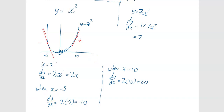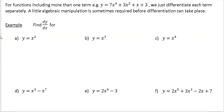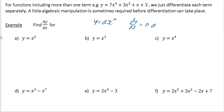For functions including more than one term — for example 7x to the 4 plus 3x squared plus x plus 3 — we just differentiate each term separately. A little algebraic manipulation is sometimes required before differentiation can take place. Remember: if y equals ax to the n, then dy by dx equals n times a times x to the n minus 1 — multiply by the power and reduce the power by one.